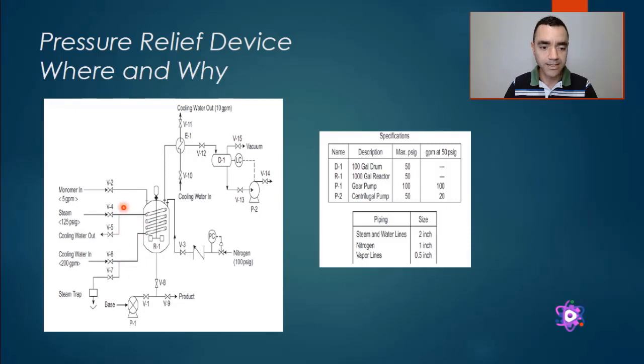My condensate inside the pipeline will start to increase temperature, increase the volume, and increase pressure. If I don't have where to release this pressure, I can break the system and cause an accident. So this is another point that I can have a pressure relief device.